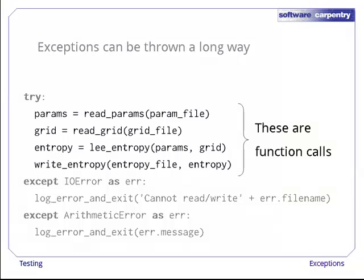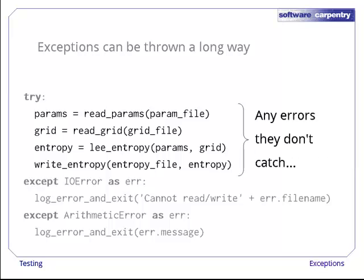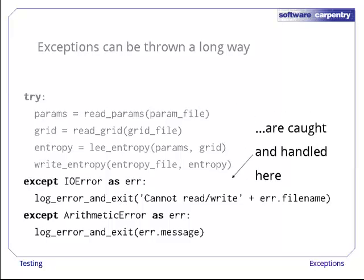The four lines in the try block are all function calls. They might catch and handle exceptions themselves. But if an exception occurs in one of them that isn't handled internally, Python looks in the calling code for a matching except. If it doesn't find one there, it looks in that function's caller and so on. If we get all the way back to the main program without finding an exception handler, Python's default behavior is to print an error message like the ones you've been seeing all along.